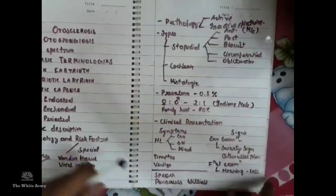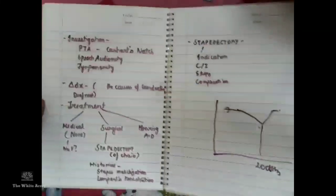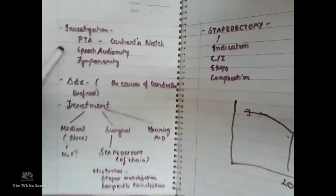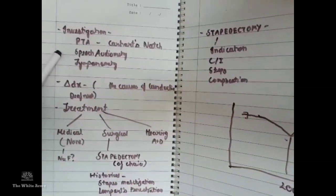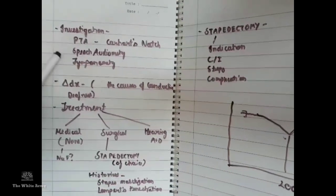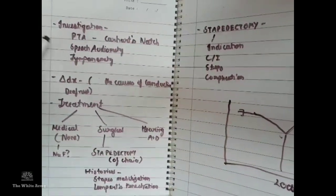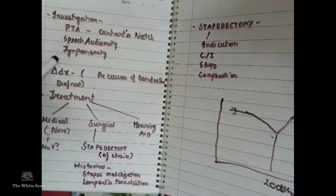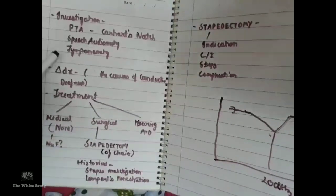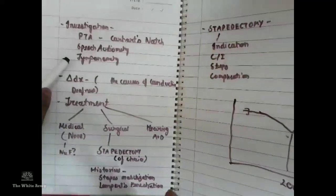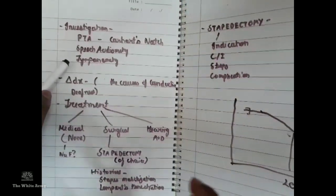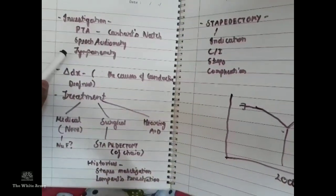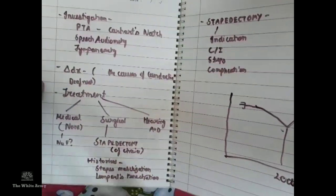Speech audiometry will be nearly normal with normal discrimination, except in those with cochlear involvement. On tympanometry, due to ossicular stiffness, a characteristic curve of ossicular stiffness may be seen, and the stapedial reflex will be absent because the stapes is fixed.